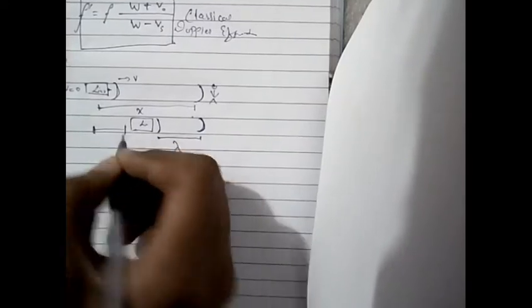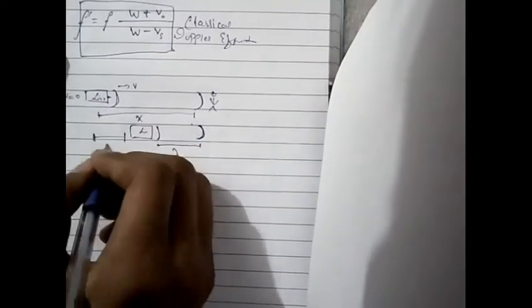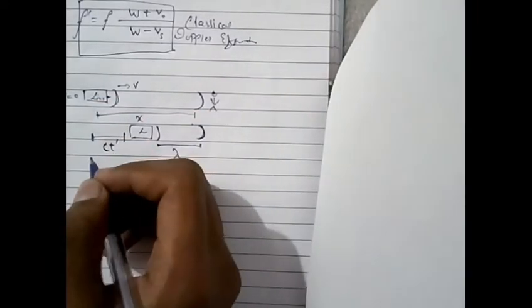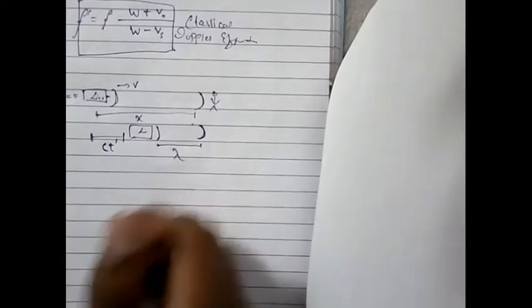What is this distance? That is the velocity times the time it took according to the frame of reference of the light that is C D prime.